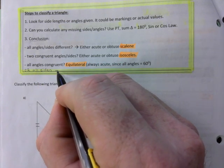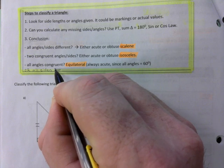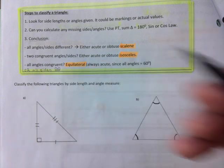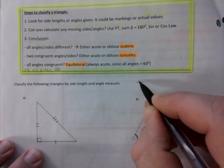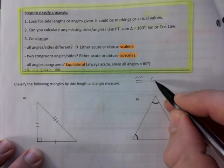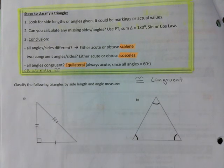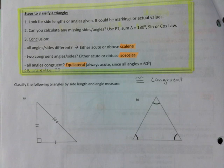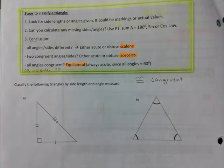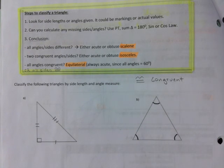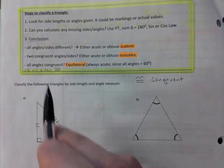Did I ever show you the symbol for congruent? An equal sign with a third wave — ≅ — that means congruent. Speaking of waves, remember when they said COVID was only going to last two weeks? Then there was the first wave, second wave, third wave, and many more after that.